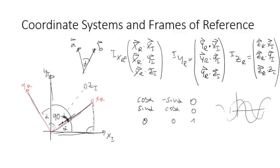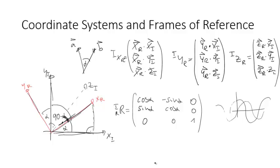What we call this matrix is a rotation matrix R, which rotates from the robot coordinate frame into the inertial frame. We put a subscript r and a subscript i to indicate this.